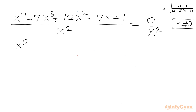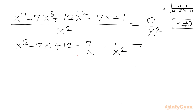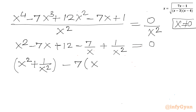Rewriting: we have x squared plus 1 over x squared, and the right-hand side is 0. Now I can collect the first and last terms together as (x squared plus 1 over x squared), take minus 7 common from the second and second-last terms to get minus 7 times (x plus 1 over x), and the constant is 12.